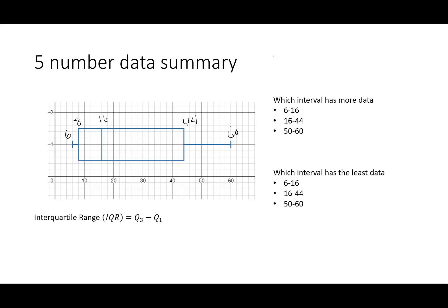So this says, which interval has more data? Is it between six and 16? Is it from 16 to 44? Or is it between 50 and 60? So here's what I look for: six to 16 that has 50% of the data, right? I go from my first quartile up to my second quartile. So that's 50% of the data is here.